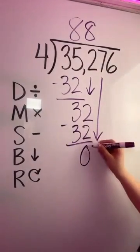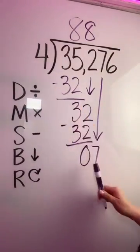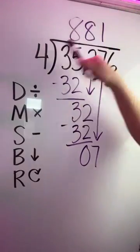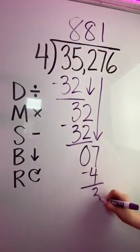We're going to bring down the next digit and repeat the process. Four goes into seven one time. One times four is four. The difference is three.